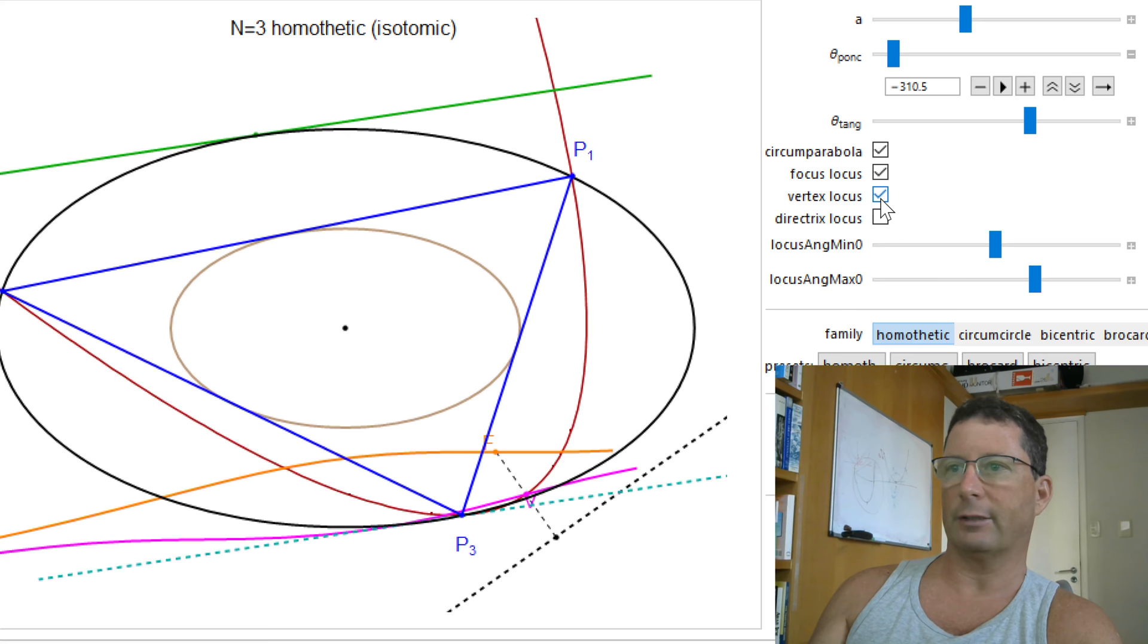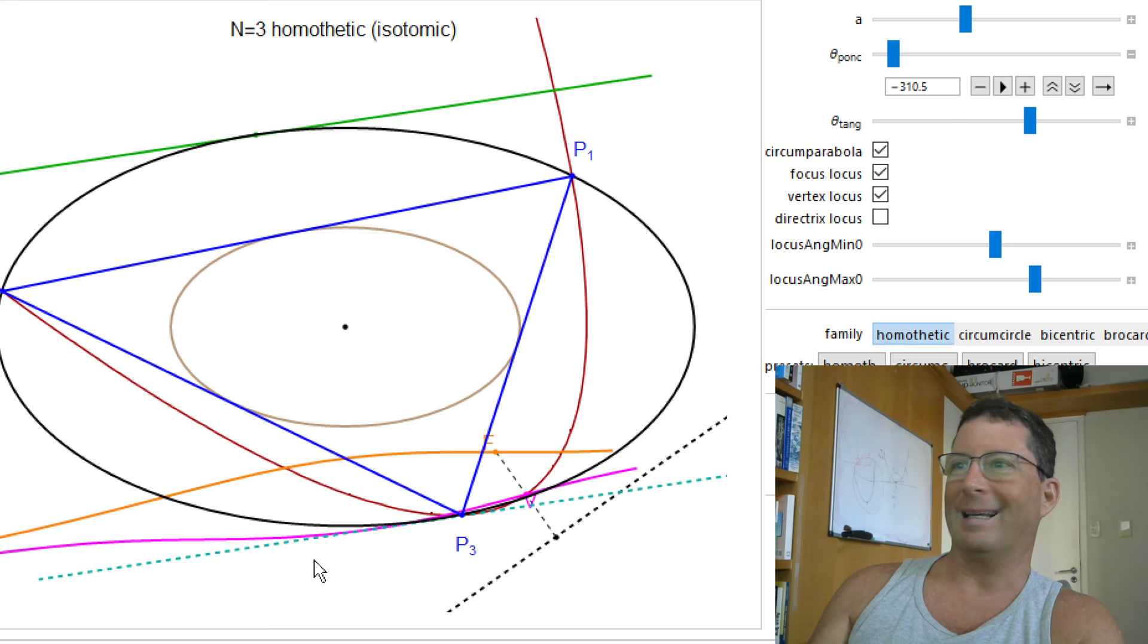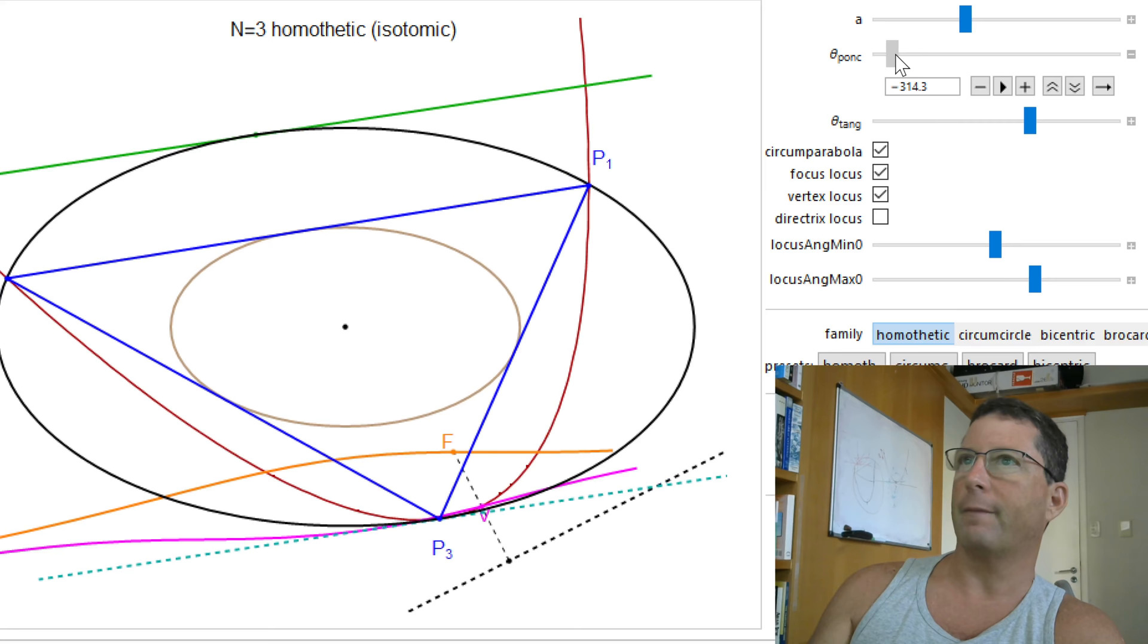locus of the focus. I can also show the locus of the vertex. Locus of the vertex is this pink line. It's actually not exactly tangent to the reflection of the green. This blue thing is just an optical illusion. If I actually change... For example,